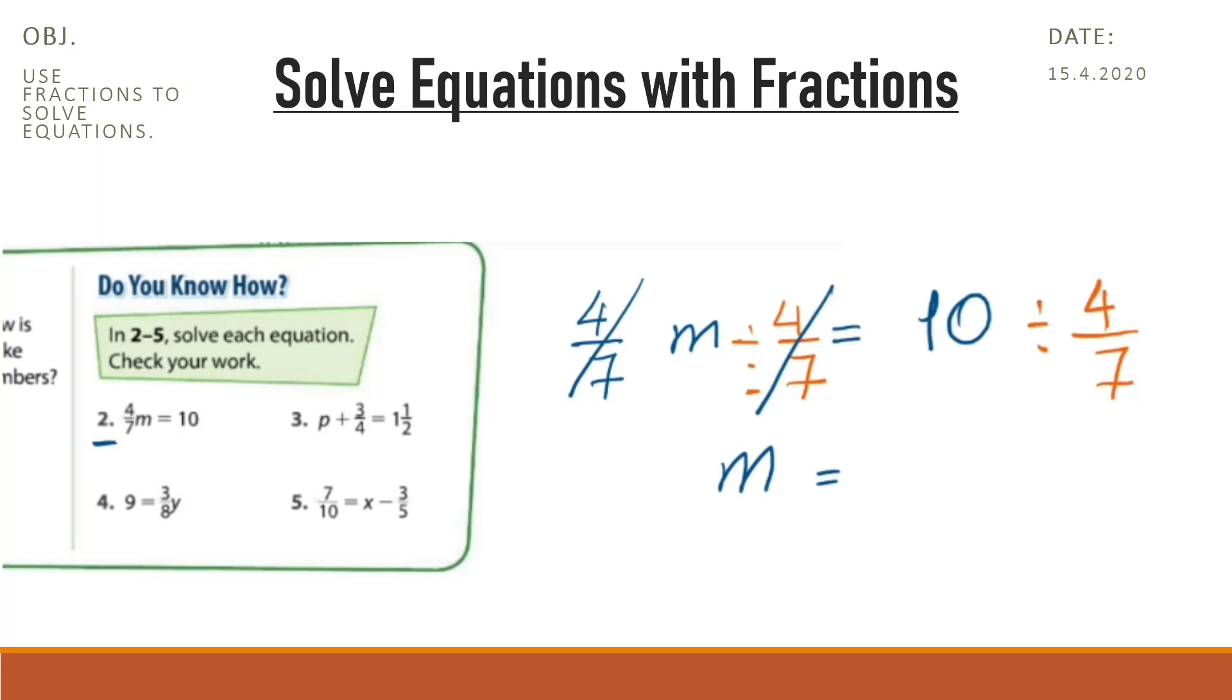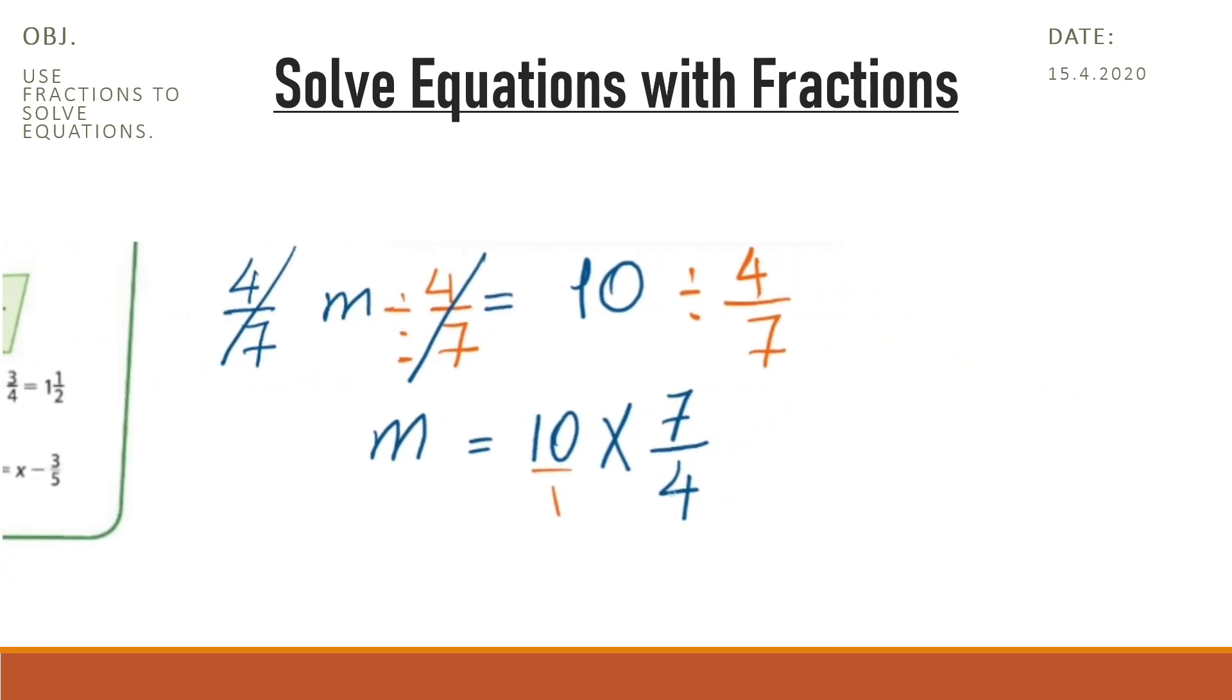Now, we should change division into multiplication. It's 10 multiplied by the reciprocal, which is 7 over 4. We have denominator 1. We can simplify: 10 divided by 2 is 5, and 4 divided by 2 is 2. 5 multiplied by 7 is 35, and 1 multiplied by 2 is 2.